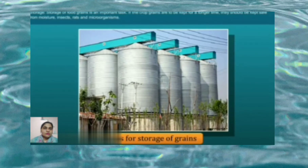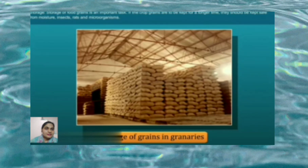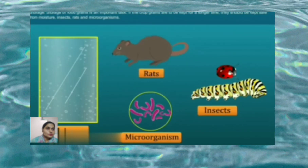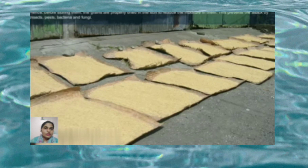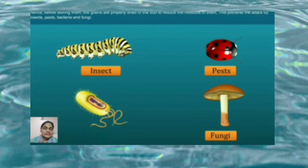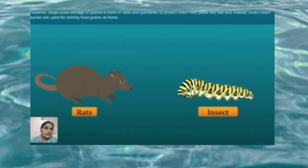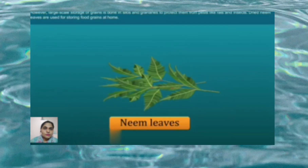Storage of food grains is an important task. If the crop grains are to be kept for a longer time, they should be kept safe from moisture, insects, rats, and microorganisms. Fresh crop has more moisture — if freshly harvested grains are stored without drying they may get spoiled and attacked by organisms, losing their germination capacity. Hence before storing, the grains are properly dried in the sun to reduce moisture. This prevents attack by insects, bacteria, and fungi. Farmers store grains in jute bags or metallic bins, while large-scale storage is done in silos and granaries. Dried neem leaves are used for storing food grains at home.